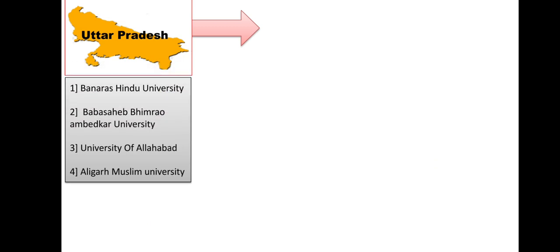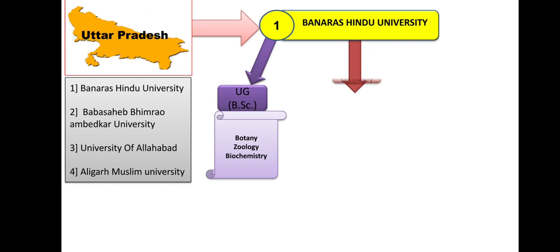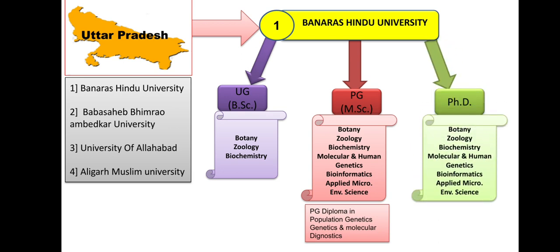Next is Uttar Pradesh. After Delhi, UP has 5 Central Universities, of which 4 have Biological Sciences courses. Let's start with BHU — Banaras Hindu University. UG is available in Botany, Zoology, and Biochemistry. PG list is quite long: Botany, Zoology, Biochemistry, Molecular and Human Genetics, Bioinformatics, Applied Microbiology, and Environmental Science. They also have PG Diploma in Population Genetics, and Genetics and Molecular Diagnostics. PhD is available in all these same subjects. Admission will be through their own entrance examination.